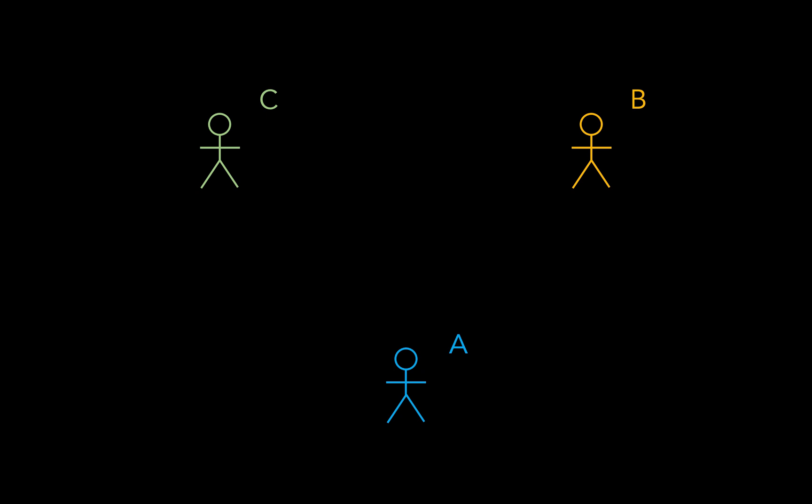So imagine we have three observers: A, B, and C. In the frame of reference of A, Observer B is travelling rightward at a speed of 0.8 times the speed of light. Observer C is travelling leftward at a speed of 0.9 times the speed of light.